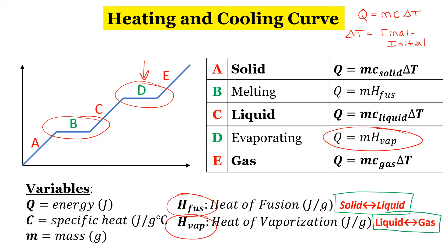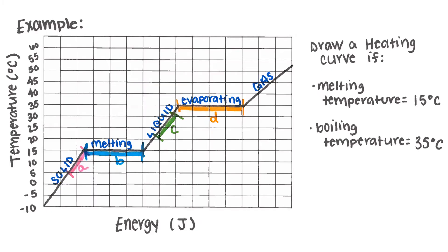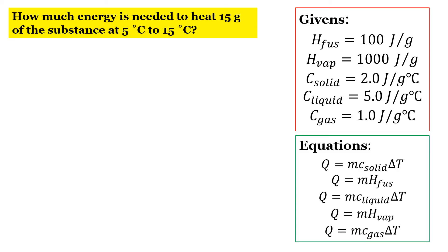Let's look at an example. I've already worked out the graph. We drew a heating curve with a melting temperature of 15 degrees Celsius — so 15 degrees Celsius is where we're going from solid to liquid — and our boiling temperature is at 35 degrees Celsius. The question asks: how much energy is needed to heat 15 grams of the substance from 5 degrees Celsius to 15 degrees Celsius? Looking at the graph, going from 5 degrees to 15 degrees Celsius means we're going to be in the solid state.